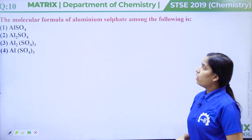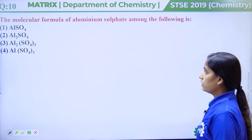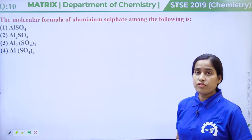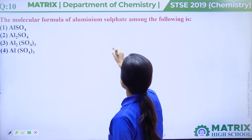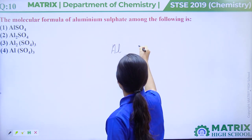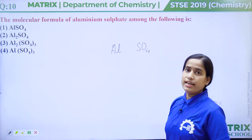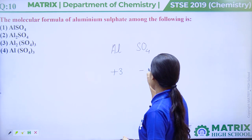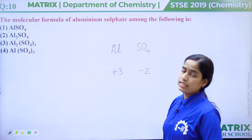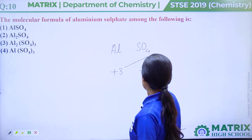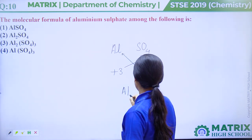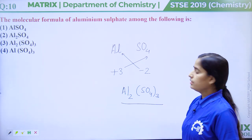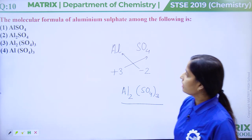Question number 10: The molecular formula of aluminium sulphate among the following is. To form the chemical formula, write the symbols: Al and SO4. Write their valencies: aluminium is +3 and sulphate is -2. Cross the valencies using the criss-cross method. We get Al2(SO4)3. This is the chemical formula of aluminium sulphate. So the correct answer is option number 3.